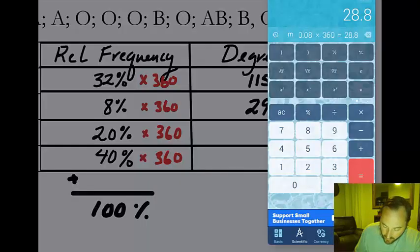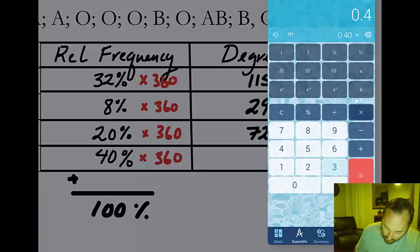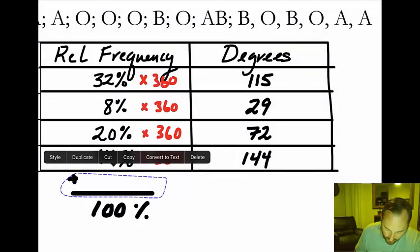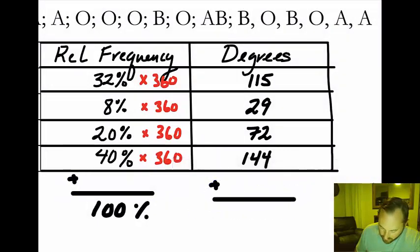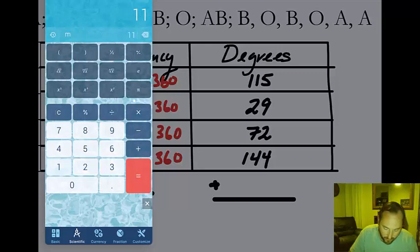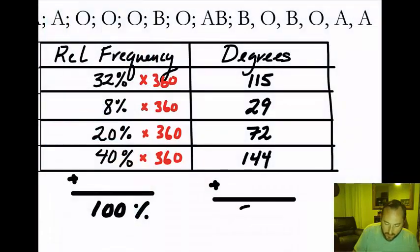Next, for 20%: 0.20 times 360 gives an even 72 degrees. Last one: 40% as 0.40 times 360 is 144 degrees. To confirm, if we add those all up — 115 plus 29 plus 72 plus 144 — we get a perfect 360 degrees.